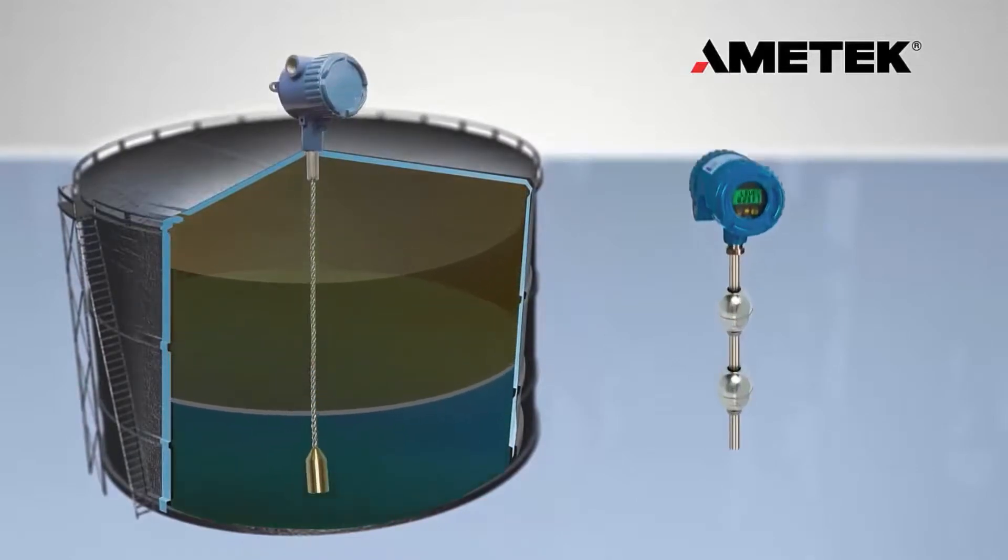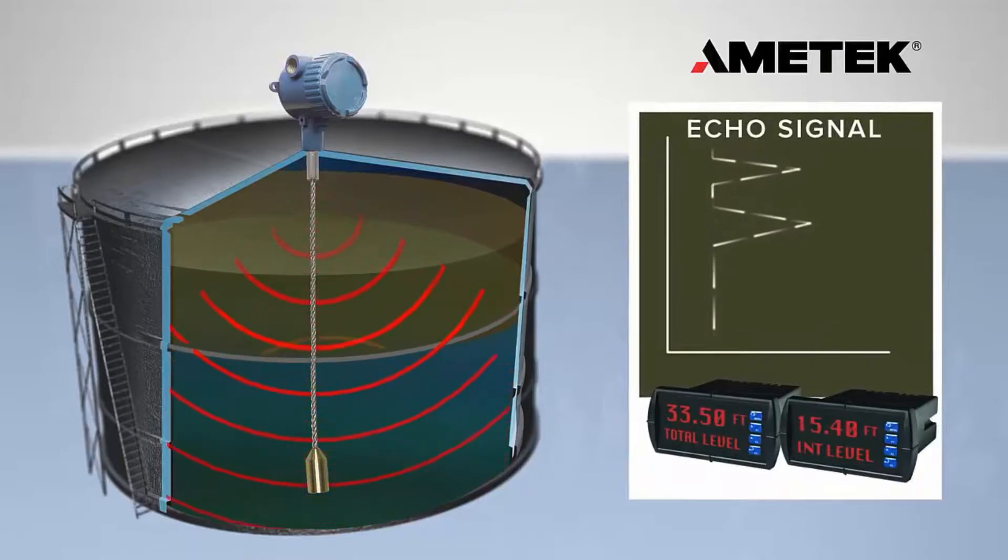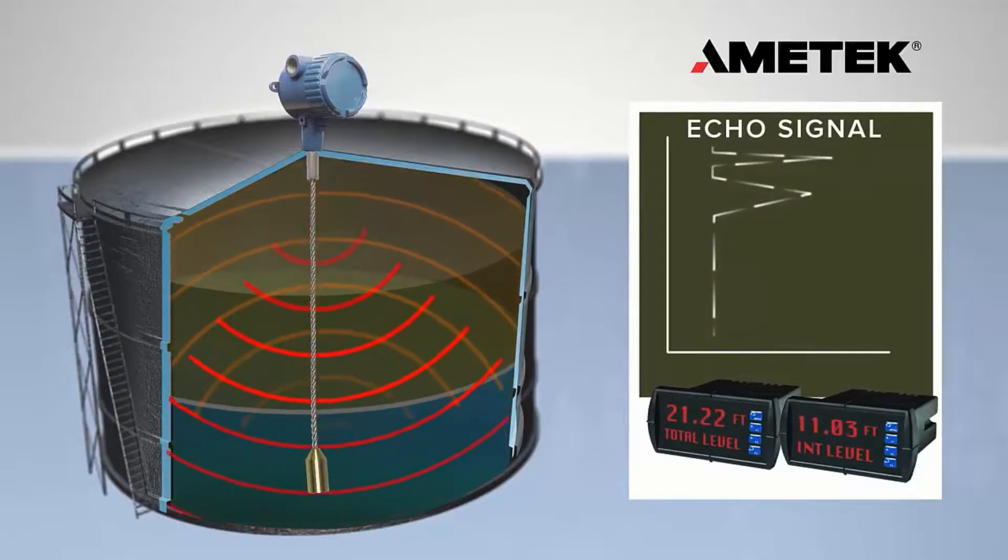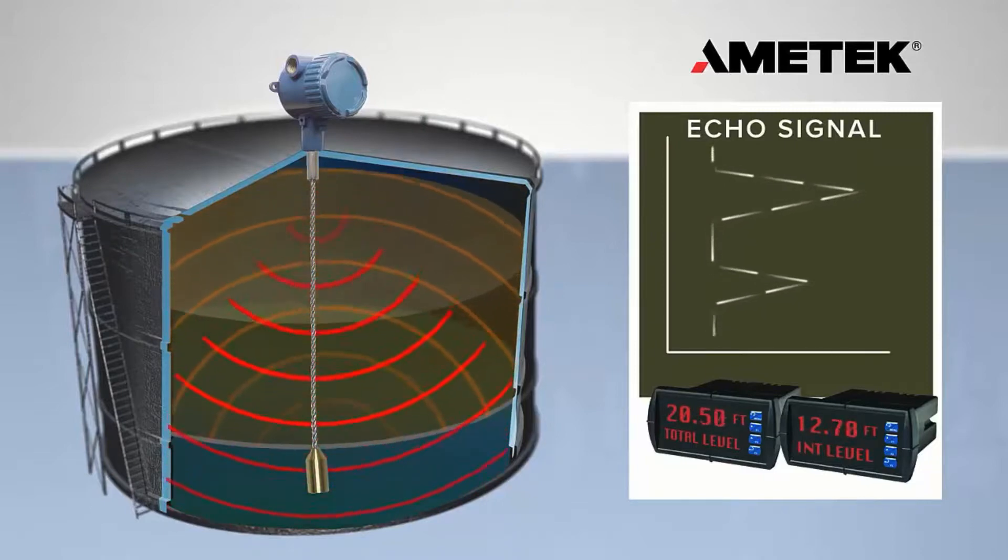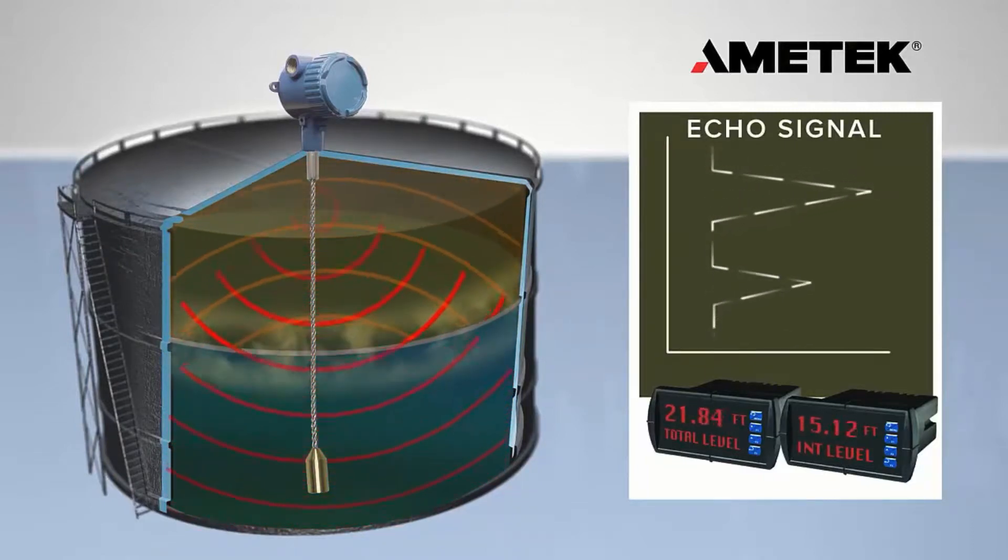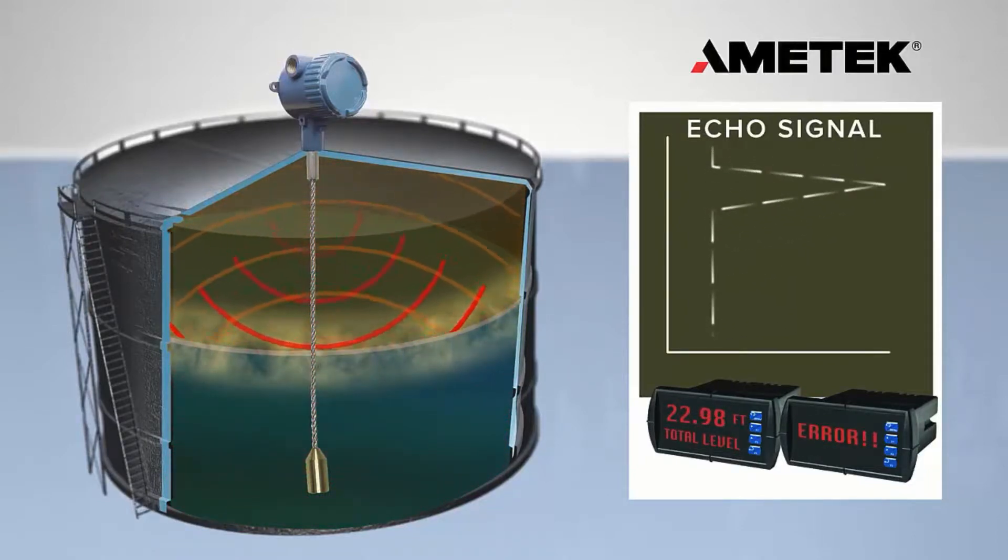Guided wave radar technology is based on microwave pulses that are transmitted down a probe and are partly reflected by the product surface as well as the interface level surface. In applications where both liquids have stabilized, guided wave radar technology can accurately determine both the product and interface level. If an emulsion layer forms between the two liquids, this can significantly diminish the measured value or even cause the complete loss of the signal.